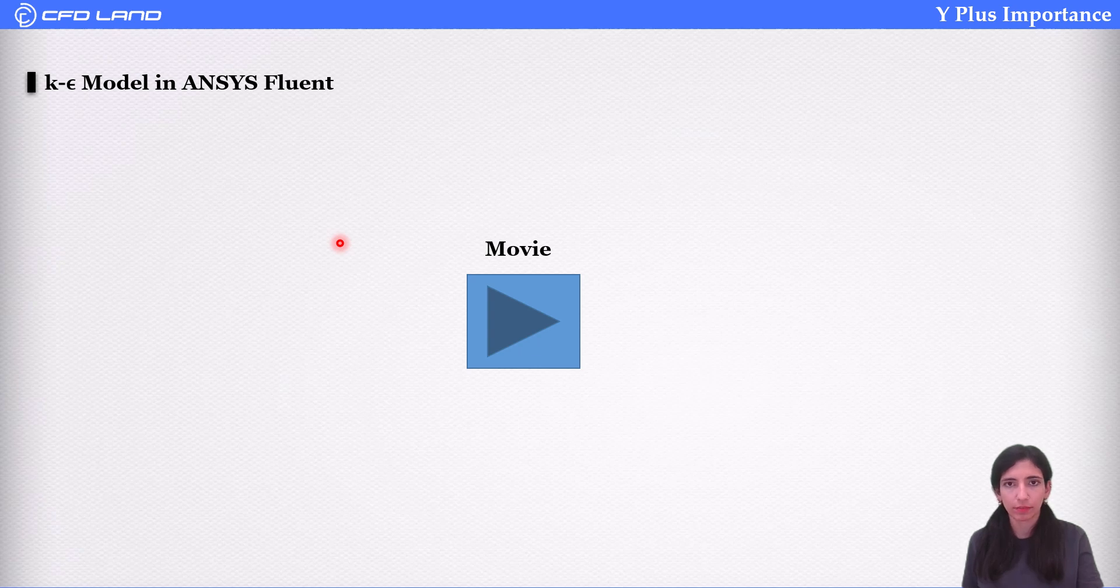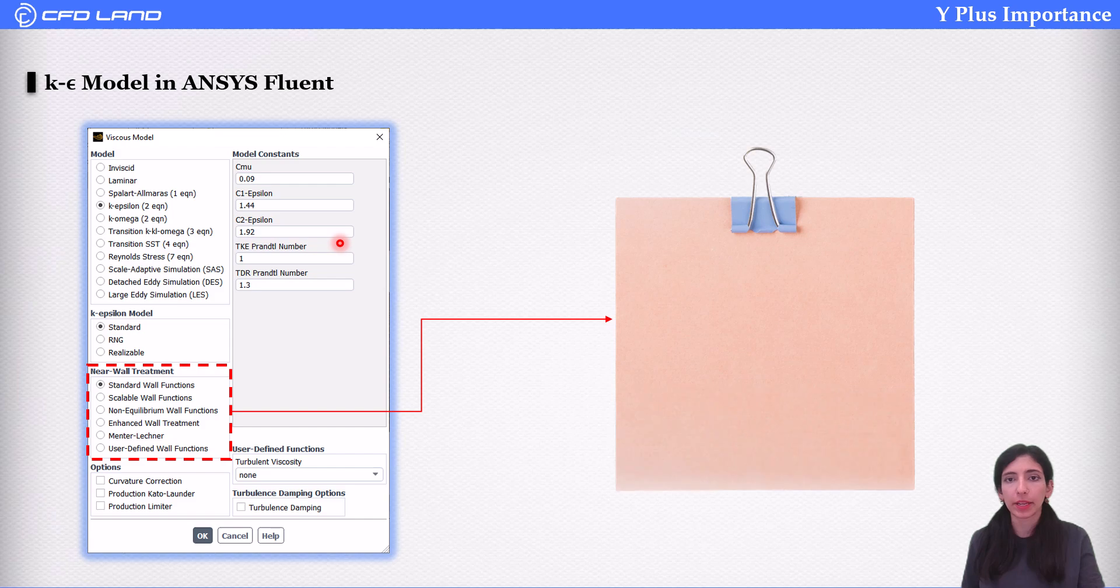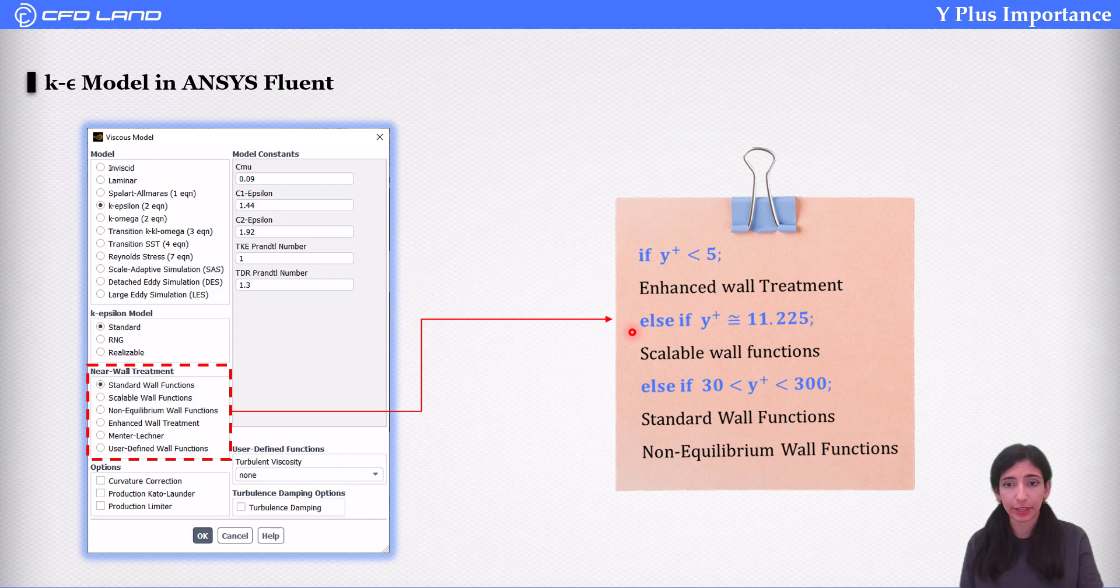So, if you are using a standard k-epsilon model to simulate a turbulent flow, your near-wall treatment options vary based on the layer that you are monitoring. So, if you are monitoring viscous sub-layer, your y-plus is less than 5, you need to use enhanced wall treatment. If it's in buffer layer, your y-plus equals 11.225, scalable wall functions. But remember, your results will have some inaccuracy. And if it's between 30 to 300, standard wall functions and non-equilibrium wall functions are for you. If you have any questions about y-plus, watch our video on y-plus.